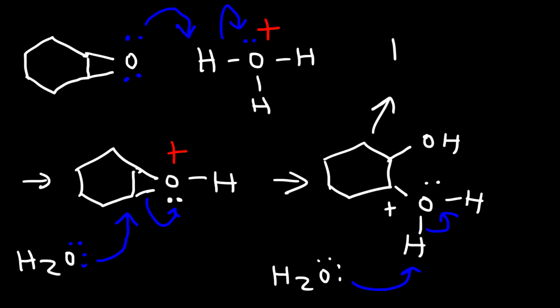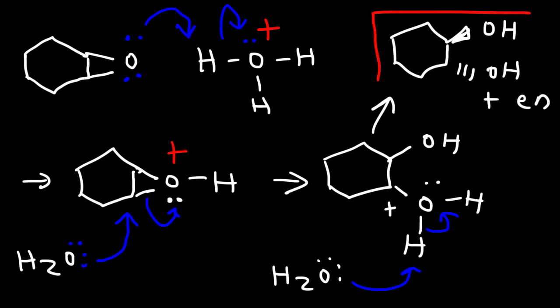So now the last thing we need to do is take another water molecule to basically take off the hydrogen. And so now we have a diol, a trans-diol, plus the enantiomer. So we have a racemic mixture of products.